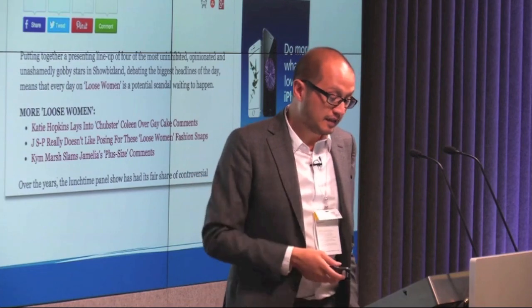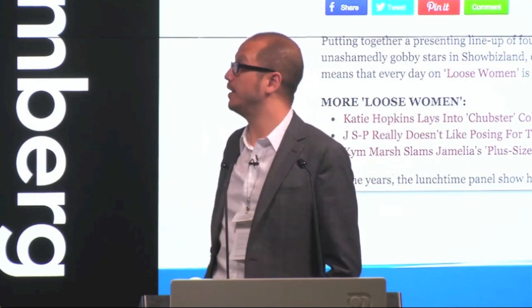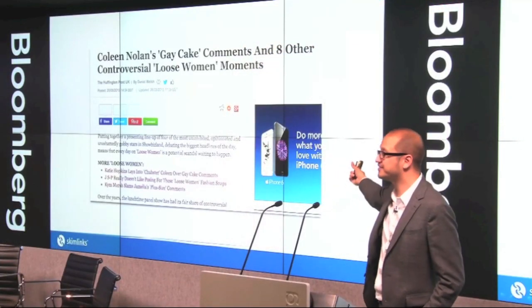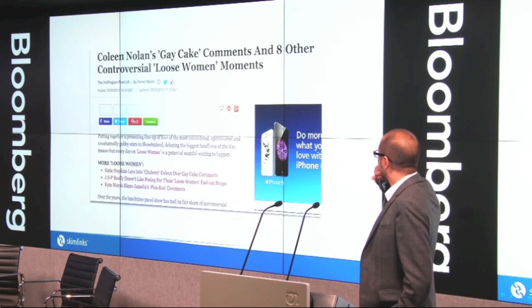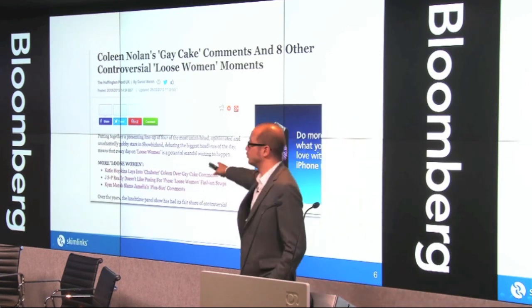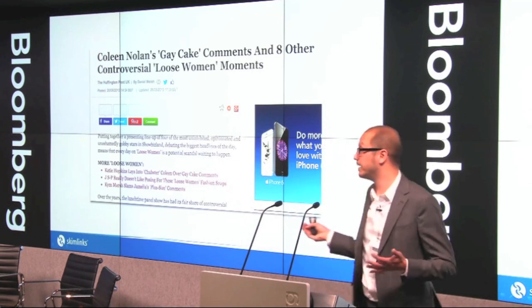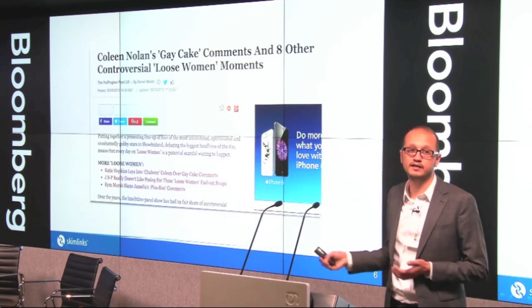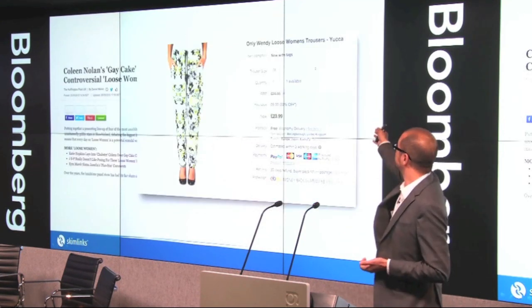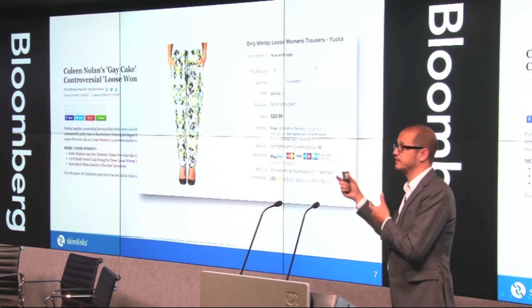I'll give you an example. One thing that we can do is take some text which doesn't have any links in it and put links in. We predict what the product is that the writer's talking about and insert a link. In this case, this is about a TV program called Loose Women. They're talking about TV stuff, celebrities and stuff. There's a piece of text which mentions Loose Women, and ideally you would want to turn that into a link to a DVD box set for Loose Women or something related to the program. What you don't want to do is advertise Loose Women's Trousers purely because the keywords kind of match up.